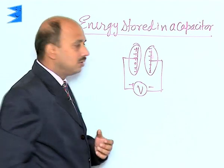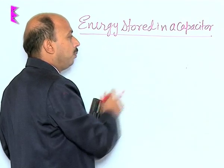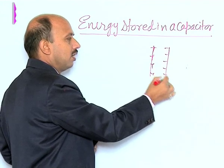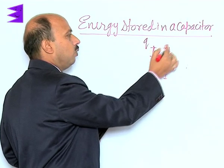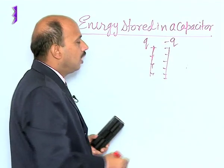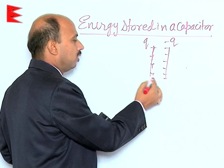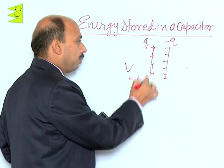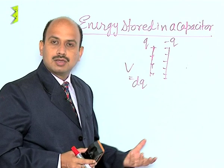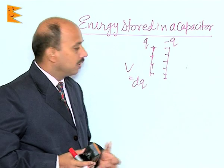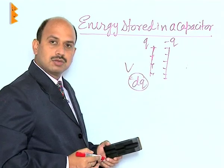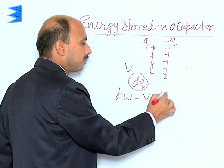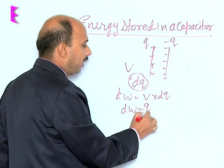Now, at any instant, let the potential difference between the two plates be V, with charge +Q on the positive plate and −Q on the negative plate. Suppose an additional small charge DQ is given to the positive plate — some work is done, and this work is stored as energy. So the work done when DQ charge is given is: dW = V·dQ, which can be written as dW = (Q/C)·dQ.